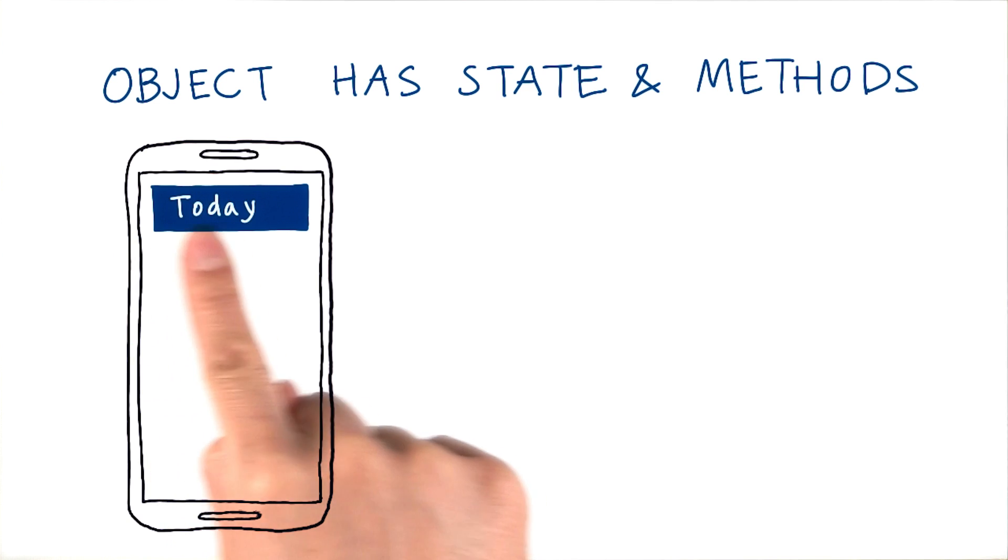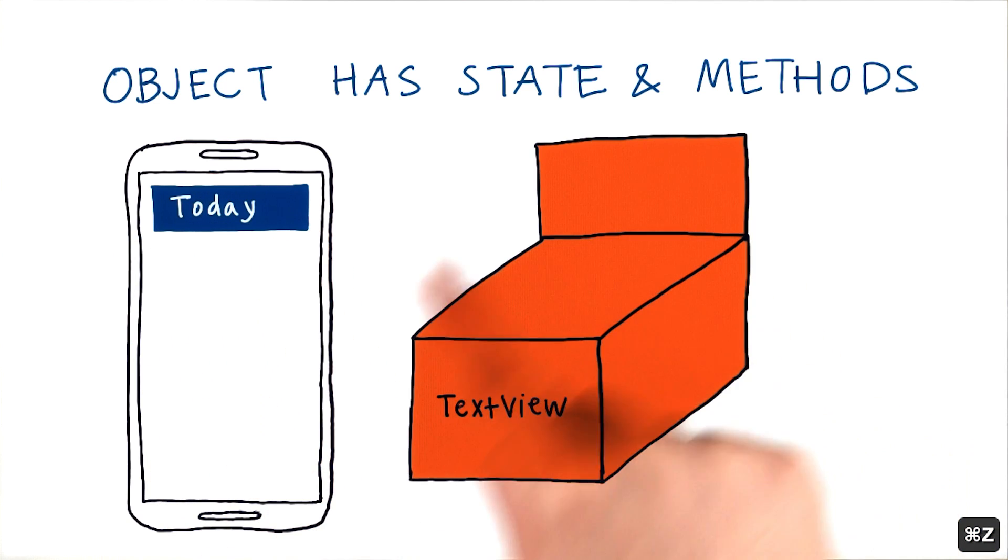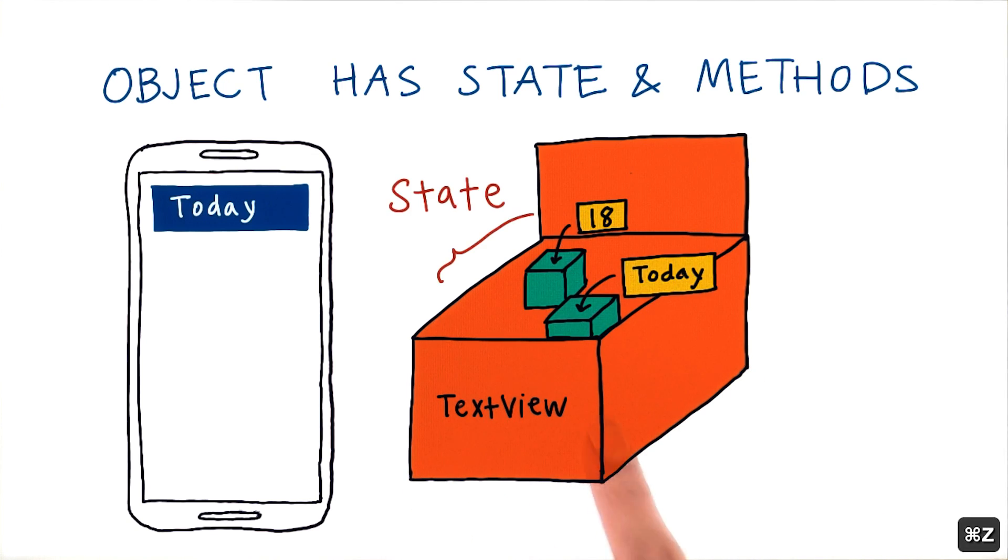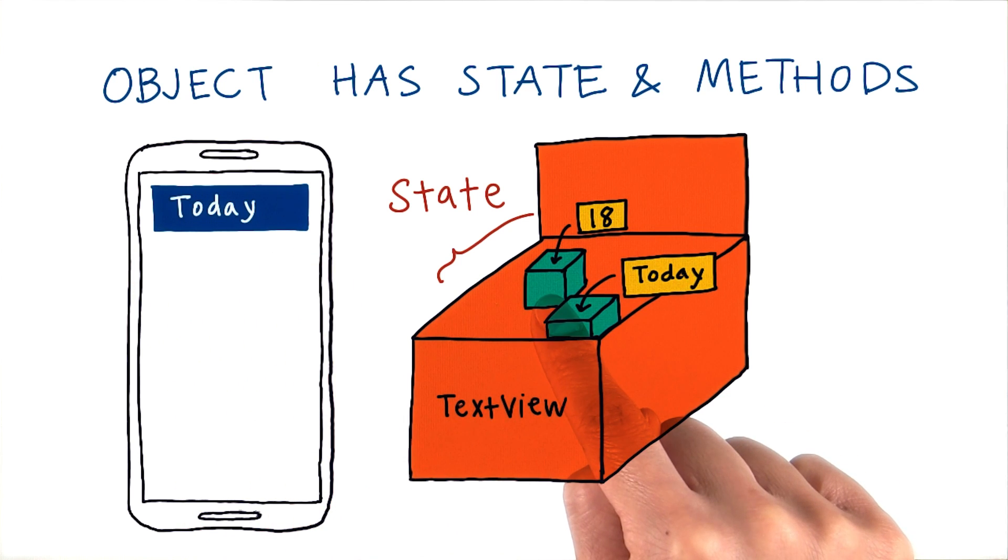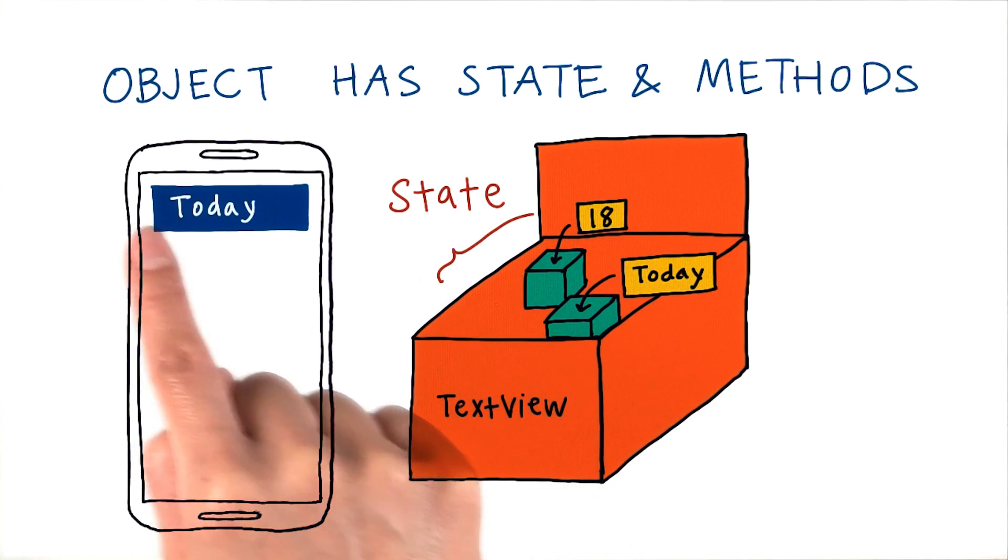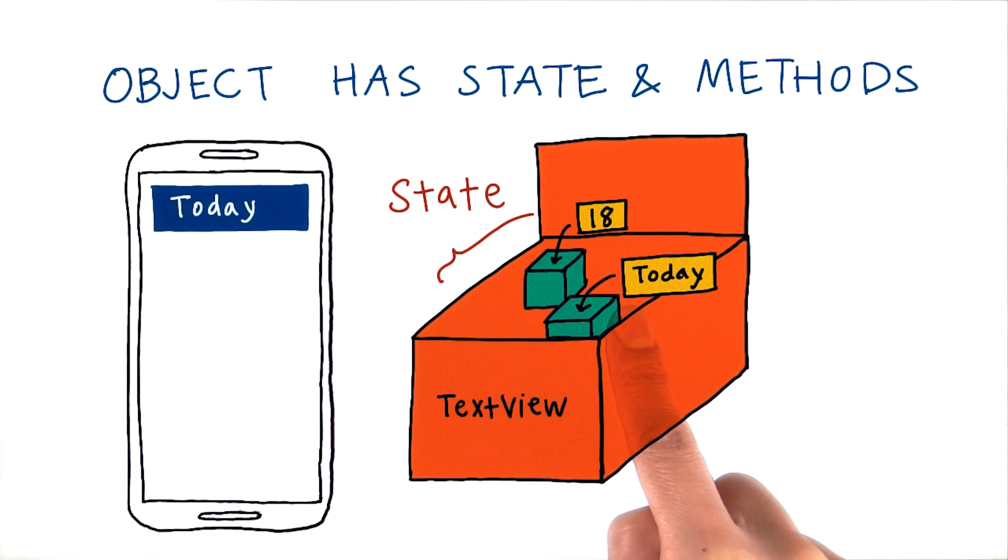As we mentioned earlier, showing a text view on the screen like this is actually controlled by a Java object within the app. This is an example of a text view Java object. It's like a box, and inside of it, it holds state. The state is made up of a bunch of fields. A field is a variable like in lesson two when we learned about global variables. We can have a text field to store the today string, which is going to be the text that's ultimately displayed on the screen. We can also have an integer field to store the font size of this text. There's also a bunch of other fields like text color, font family, that make up the state of the text view. I just didn't draw them in this picture.